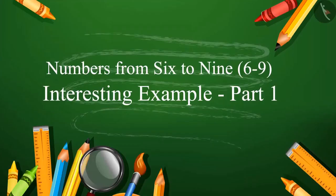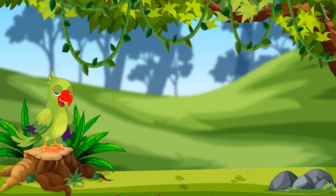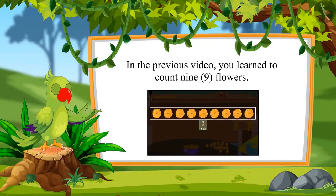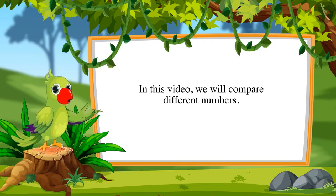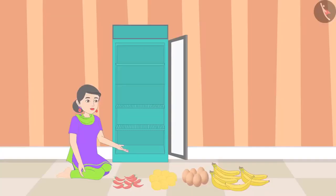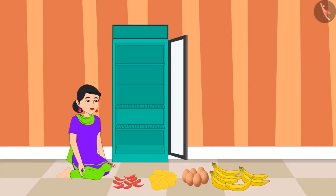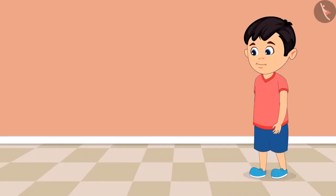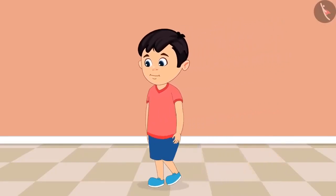Interesting Example Part 1. So children, in the previous video you learned to count nine flowers. In this video we will compare different numbers. Today Chotu's mother is cleaning the refrigerator. She has kept all the items out, and Chotu comes to help her.